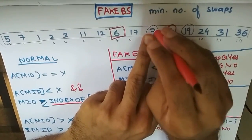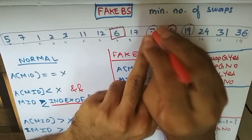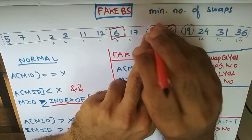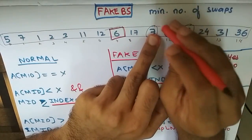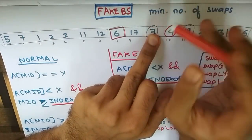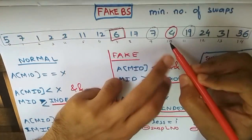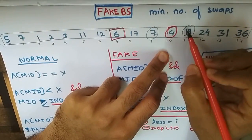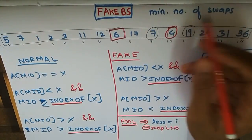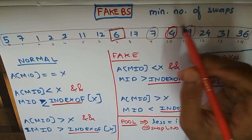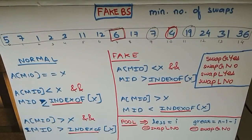We swap that 7 with an element less than 4, say 1. In that case binary search proceeds in the right direction, and we'll find the required element where a[mid] equals x, and 4 is found. So we are asked to find the minimum number of swaps to make this binary search work.